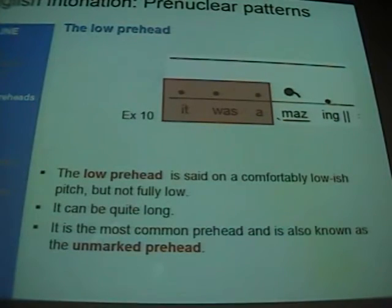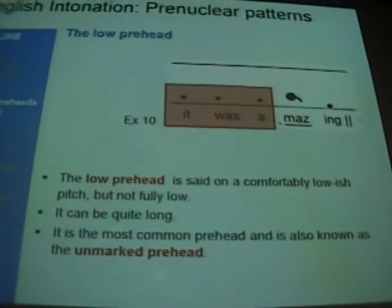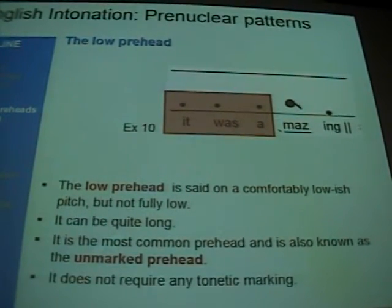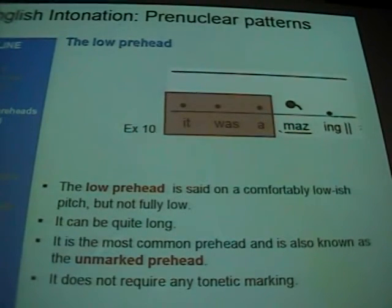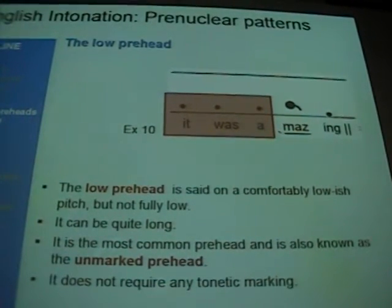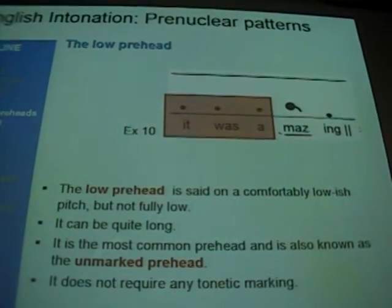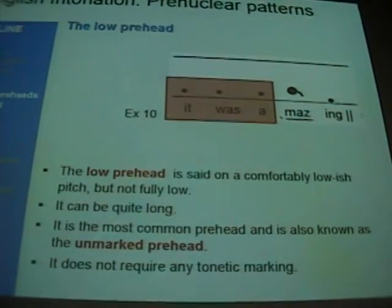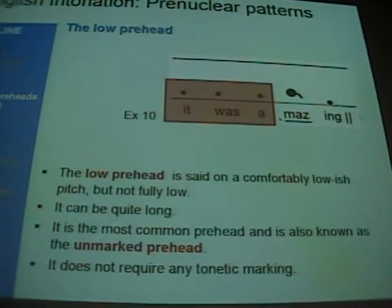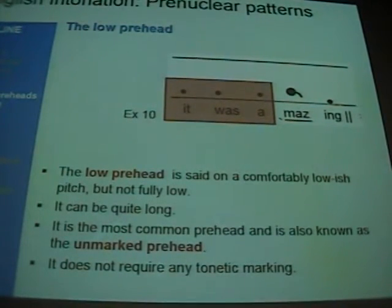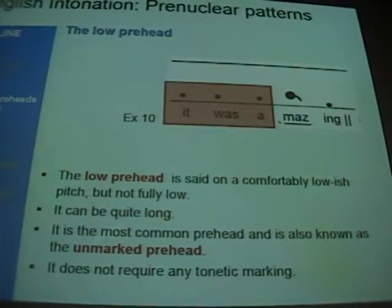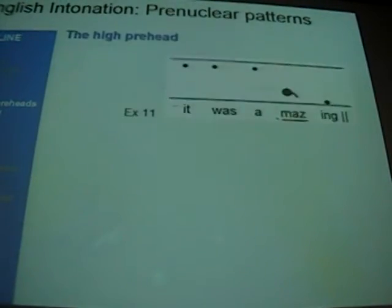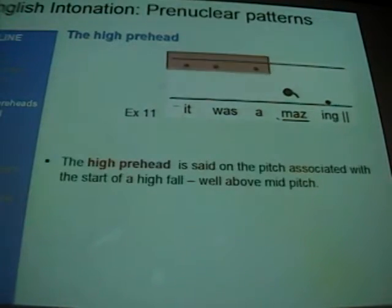Unmarked means unremarkable, commonplace, everyday. And it is literally unmarked in transcription — we don't put a mark for it; it's the default. If you don't see a mark, you know it must be the low pre-head. There's no diacritic marking to learn for this. So this one sounds: 'It was amazing.' The high pre-head, however, is a bit different.